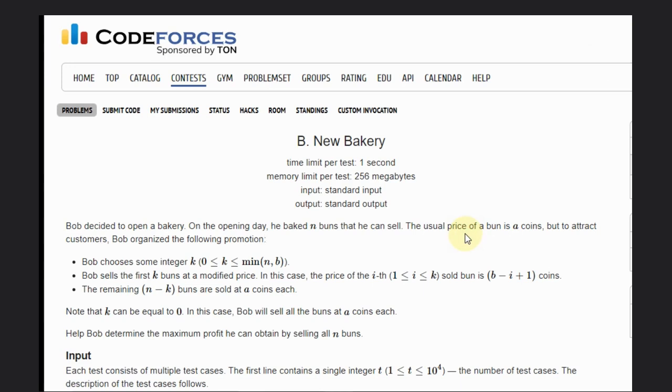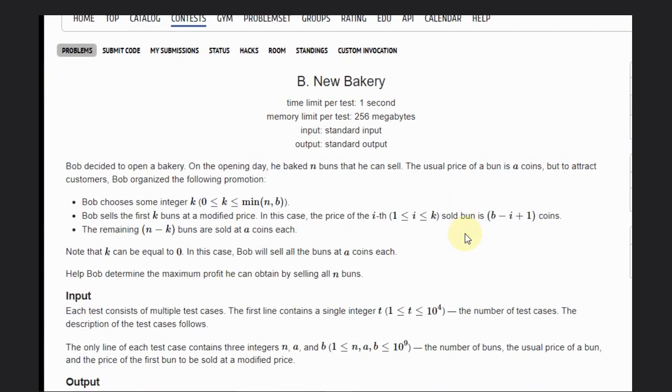To attract customers, Bob organizes the following promotion: Bob chooses some integer k from 0 to minimum of n comma b. Bob sells first k ones at a modified price, where the price of the i-th sold one is b minus i plus one coins. The remaining n minus k ones are sold at the usual price of a coins each. If k equals 0, Bob will sell all the ones at a coins each.